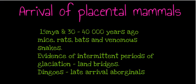For at least 30 million years, Australia was dominated by marsupials that filled most niches; however, environmental change had dramatic impacts on them. Around 15 million years ago, and again between 30 and 40 thousand years ago, there was the arrival of placental mammals — which, like humans, give birth to fully formed live young. These included mice, rats, bats, and venomous snakes including rear-fanged snakes with close relatives in Asia, as evidence for intermittent glaciation periods when lower sea levels allowed land bridges to form.